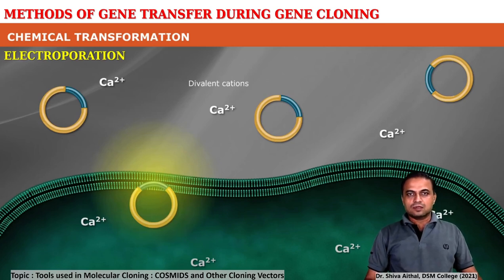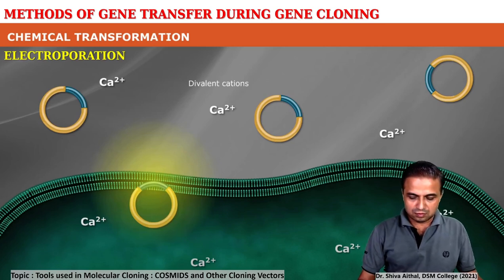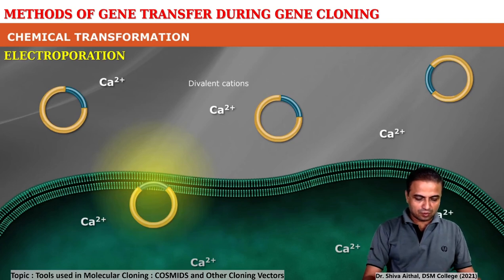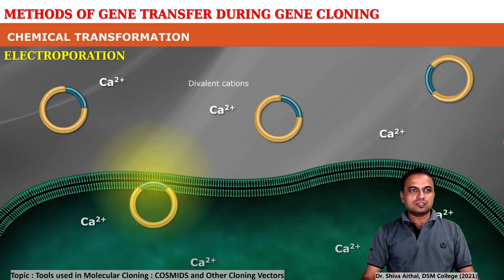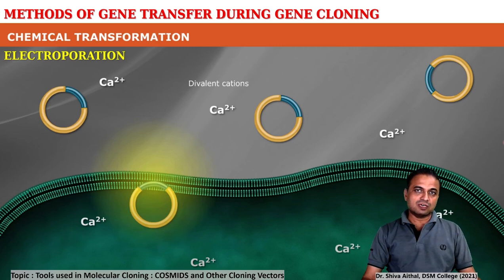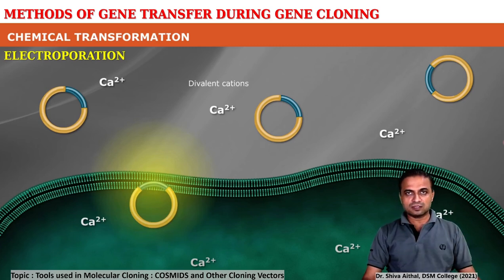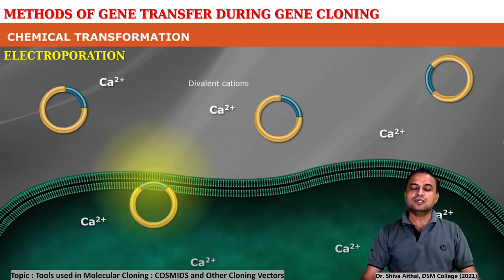Hello and welcome dear friends. Let us move on in understanding some of the methods of gene transfer during gene cloning. Today I would like to discuss two very important gene transfer methods: namely the chemical transformation, which is similar to Griffith's transformation which we have seen in earlier semesters, and the second is electroporation — the use of electricity to insert DNA inside a cell.